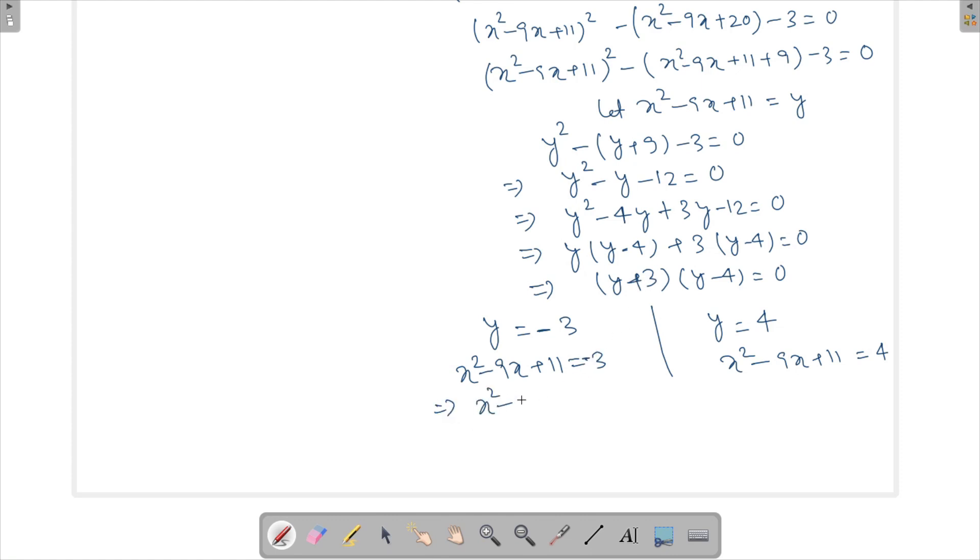Now this will become x² - 9x + 14 = 0, and this will become x² - 9x + 7 = 0. Now if I look at this, what will I find? I will find x to be (9 ± √(b² - 4ac)) / 2, which will give me (9 ± √(81 - 28)) = (9 ± √53) / 2. So from here I will get only irrational roots, which is something which I don't want.